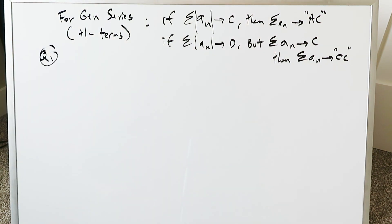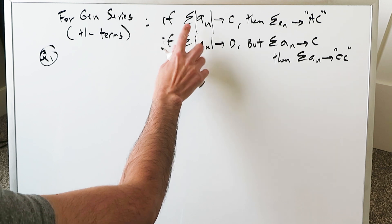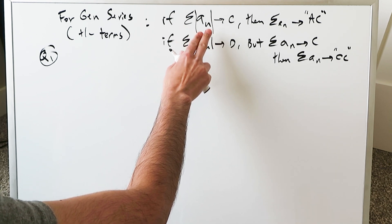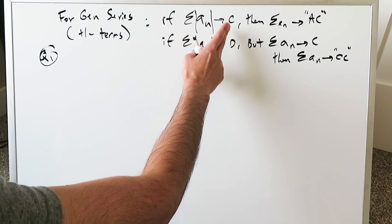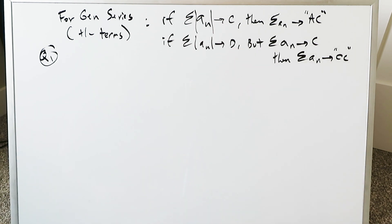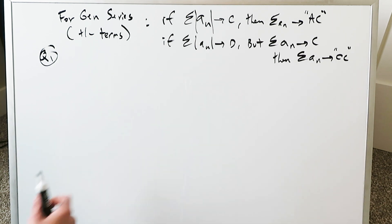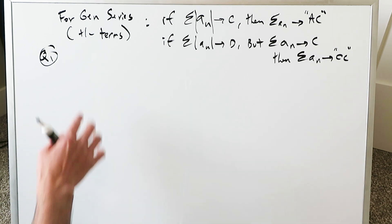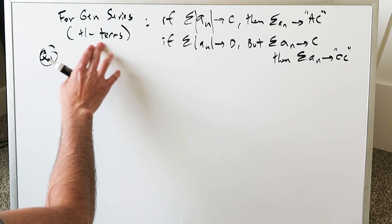When I present the questions, always look at the framework: we examine the absolute value version first. If that is convergent or divergent, we determine what happens to the non-absolute value version. Then we look for absolute convergence (AC) or conditional convergence (CC). Series with positive and negative terms are those where you evaluate further with regards to absolute or conditional convergence.